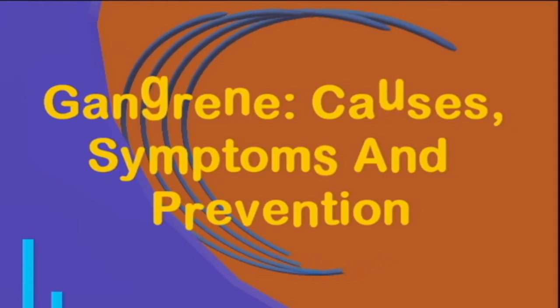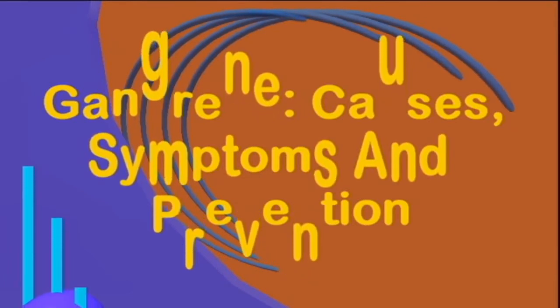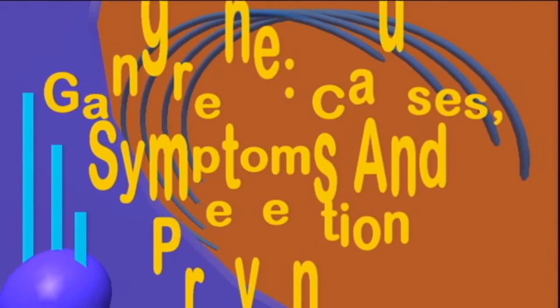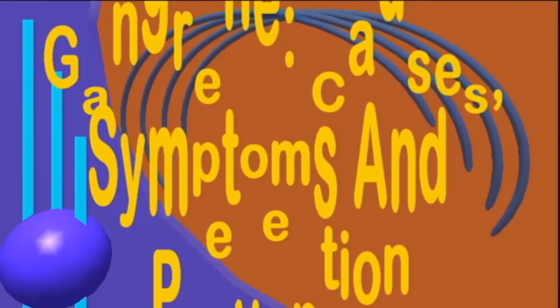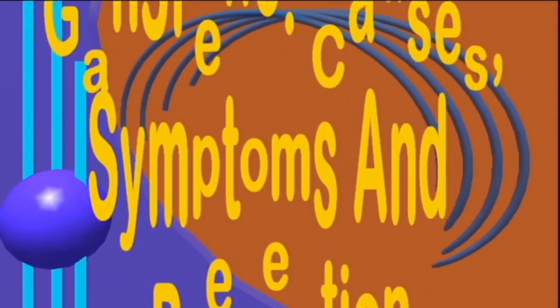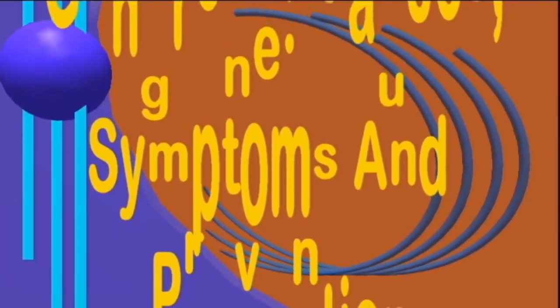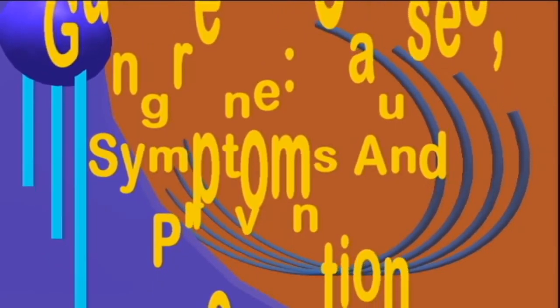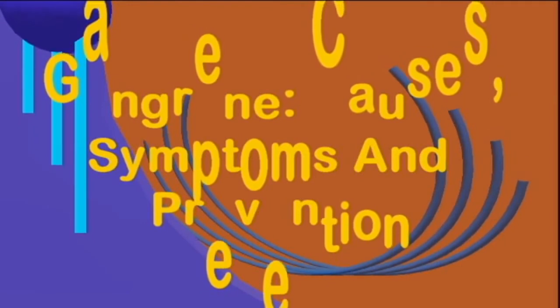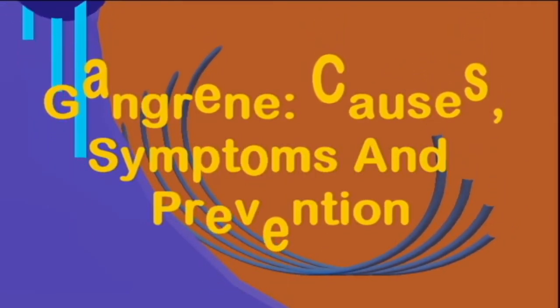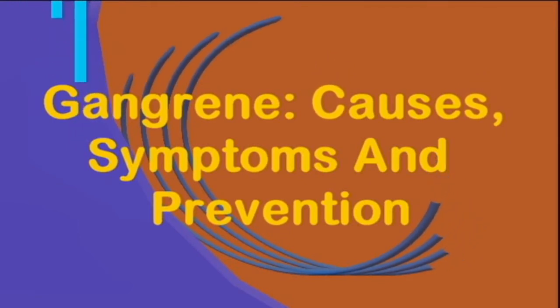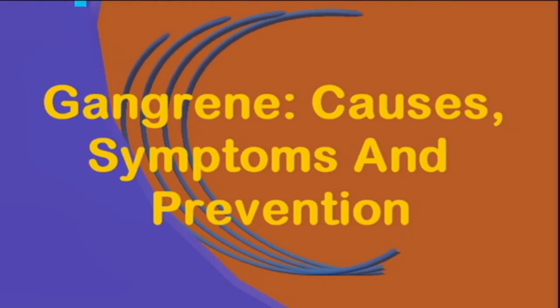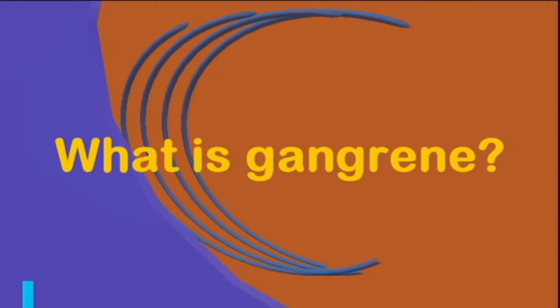Gangrene happens when a lack of oxygen-rich blood causes tissue to die in some part of the body, often the hands or feet. It is a serious condition that can result in amputation of a limb or death, and needs urgent treatment to halt the spread of tissue death. Diabetes is a key linked condition, as diabetic neuropathy or nerve damage can mean a person has an injury and does not notice it. Smoking and conditions such as Raynaud's disease are also risk factors.